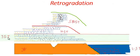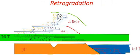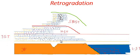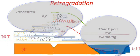Transgressive system tracts form during retrogradation.